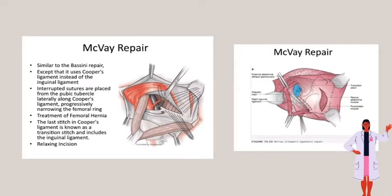Next, we have McVay's repair, which is similar to Bassini's repair except that it uses Cooper's ligament instead of the inguinal ligament. Interrupted sutures are placed from the pubic tubercle laterally along Cooper's ligament, progressively narrowing the femoral ring. This method is also used for treatment of femoral hernia. The last stitch in Cooper's ligament is known as a transition stitch and includes the inguinal ligament and a relaxing incision.